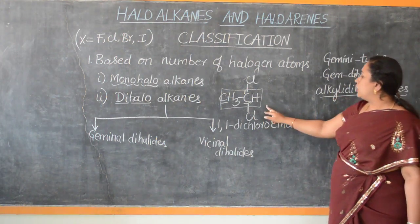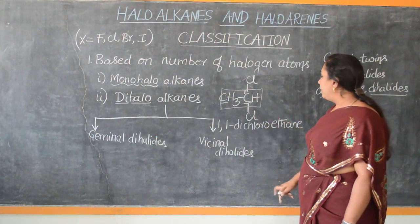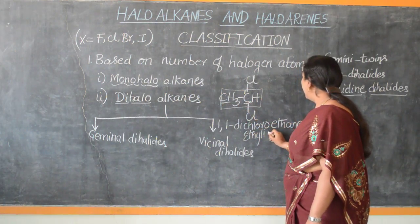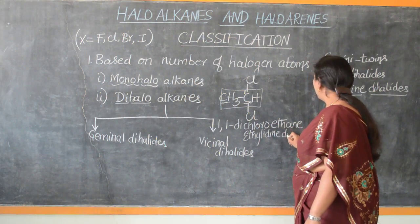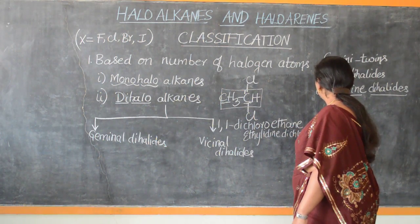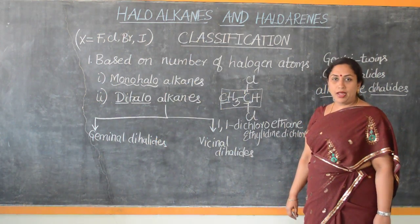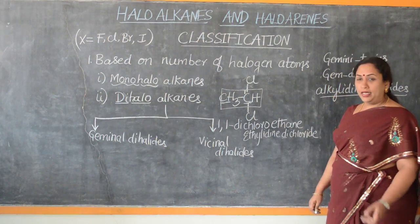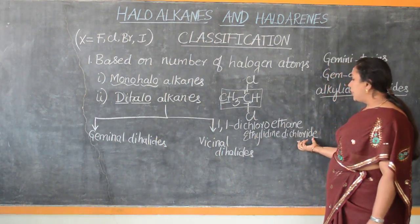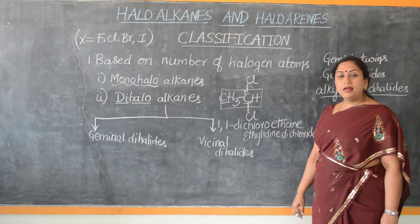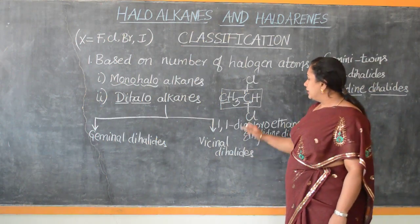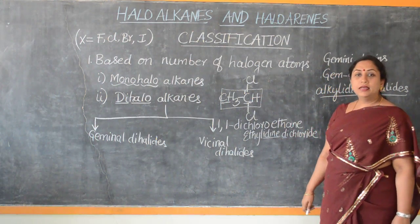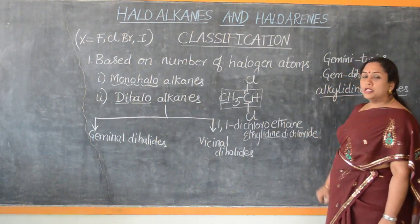Applying this name to the compound, we can call it ethylidene dichloride — ethylidene because it has two carbon atoms, and dichloride because the halide is chlorine. To be more specific, it is ethylidene dichloride, or simply ethylidene chloride. The suffix '-lidene' indicates that we are talking about gem dihalides.